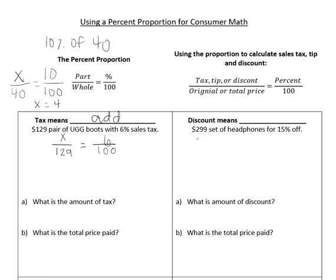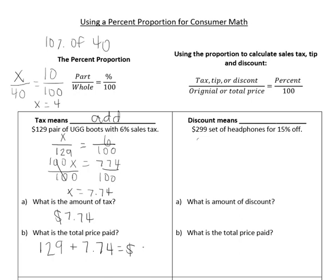All we have to do now is just cross multiply. So we do x times 100, which is written as 100x, equals 129 times 6, which is 774. To solve for x, we divide both sides by 100, and that gets us x equals $7.74. So that means the amount of tax is just going to be $7.74. But when it asks for the total price that's paid, we need to add. Tax means you add. So we do $129 just for the boots, plus the $7.74 of sales tax. The total price for these boots altogether is $136.74. Just remember for tax that we're adding. The T in tax, if you think of a T, kind of looks like a plus sign. So that can remind you that you need to add when you're talking about tax.